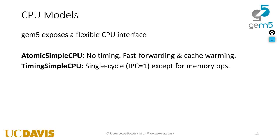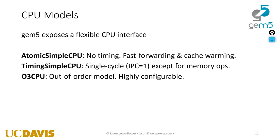The timing simple CPU is a single-cycle CPU similar to what we just looked at — every request takes one cycle except memory operations, which take however long the memory system takes, and there's no memory level parallelism with only one memory request at a time. The out-of-order CPU is incredibly configurable but easy to abuse — the defaults are essentially random and don't mean anything. If using the O3 CPU, I strongly encourage you to understand all parameters and set them to something reasonable. By default it's eight-way out-of-order, which hardly any real systems are.